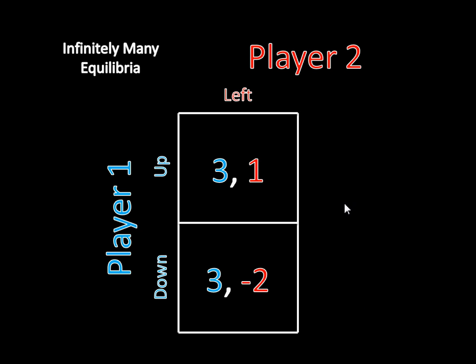Let's get rid of Right and reduce the game. We're going through iterated elimination of strictly dominated strategies here. Now, if Player 2 plays Left, Player 1 is indifferent between Up and Down because he gets 3 regardless of his choice. As long as Player 2 is playing Left as a pure strategy, Player 1 doesn't care whether he plays Up or Down. He's indifferent between those.